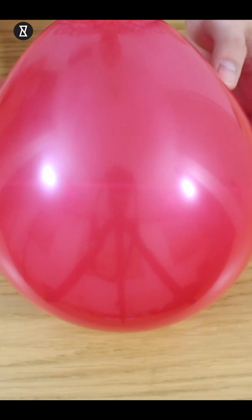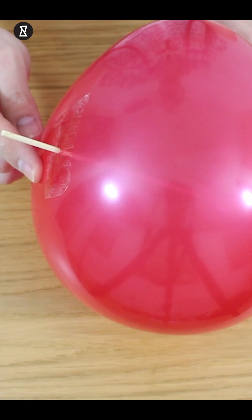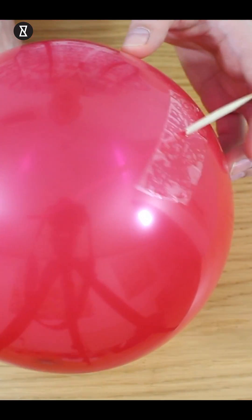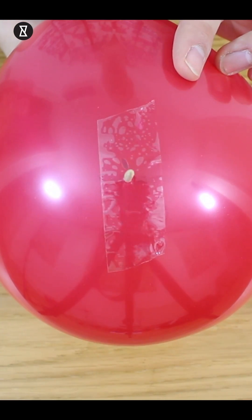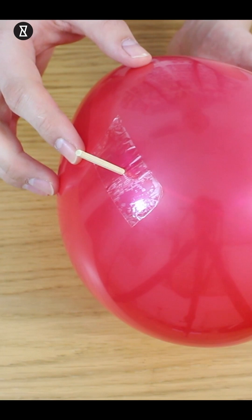There's already surface tension in the balloon because you've blown it up. And so when you push the skewer through the side, the rubber clings and sticks to the outside of the skewer, meaning air is not able to escape.